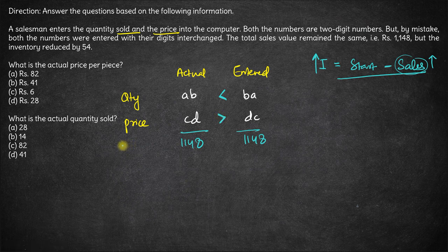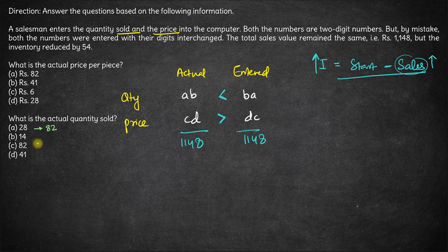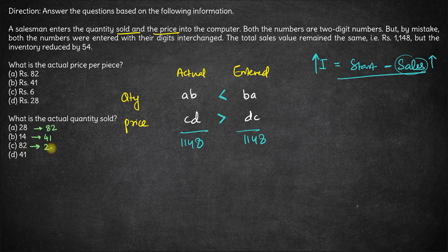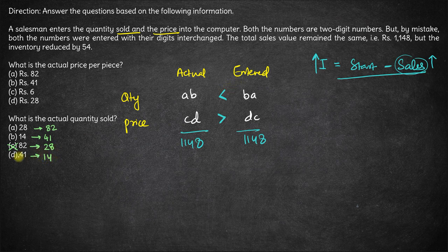Now let us look at the second question first: what is the actual quantity sold? If the actual quantity sold is 28, then the entered quantity must have been 82 — the actual is less than entered, which makes sense. If actual is 14, the entered quantity must be 41 — again actual less than entered, which makes sense. Here, if the entered quantity must be 28, this can be outrightly rejected since actual quantity has to be less than entered, which is not the case. Same here — actual quantity 41 is more than entered, so this is also rejected. So we have only two options remaining.